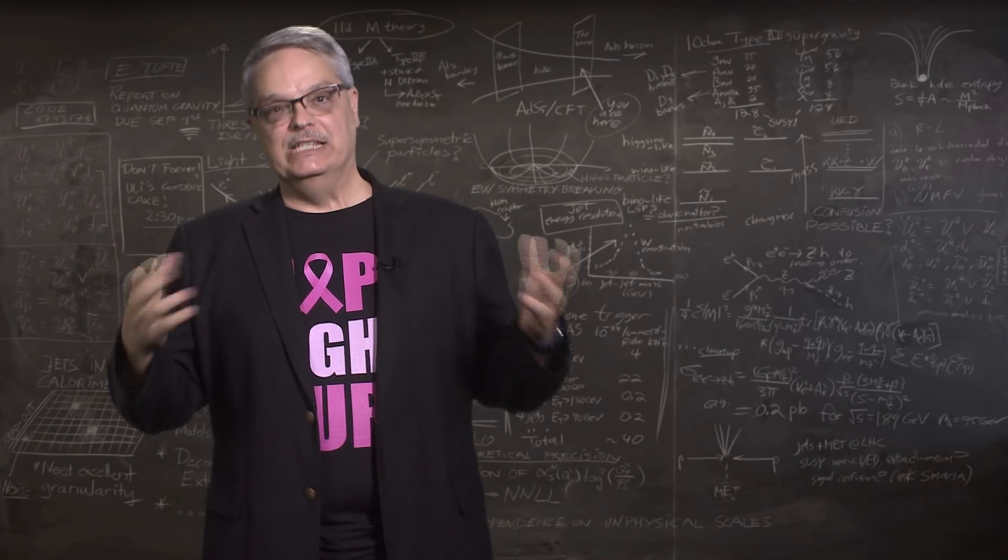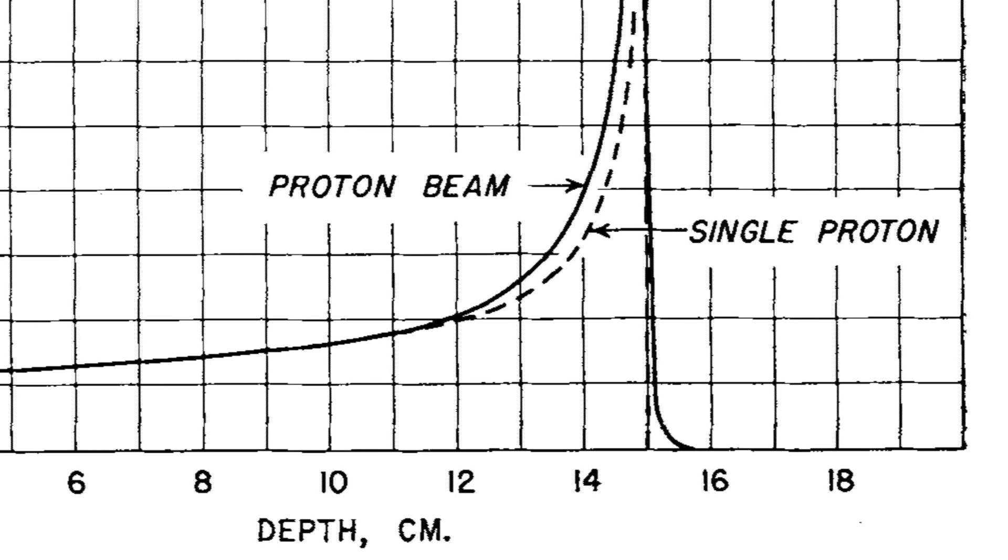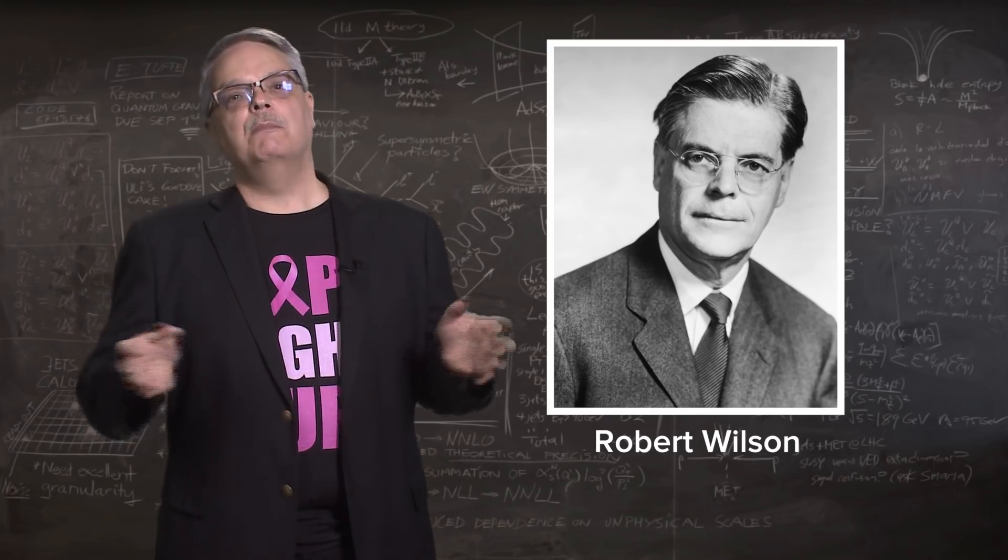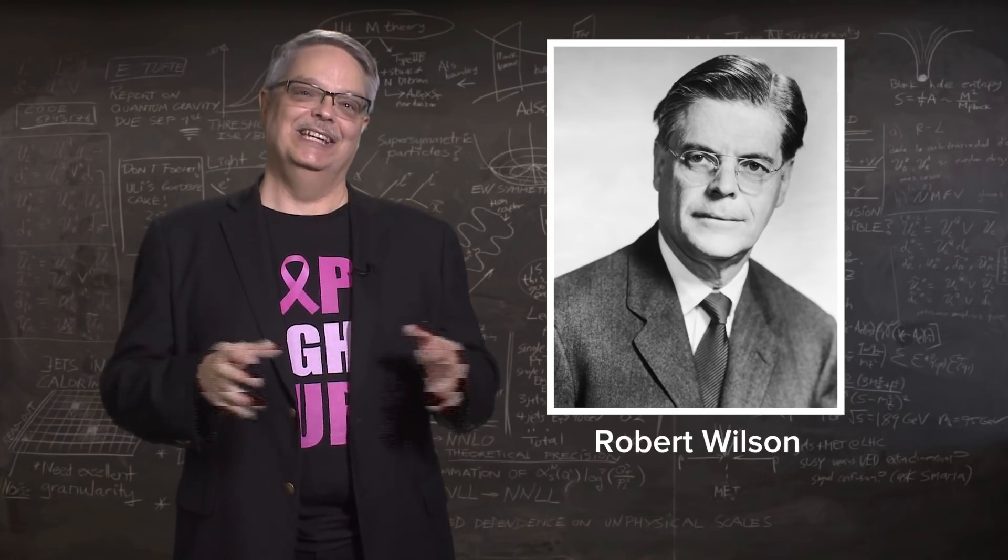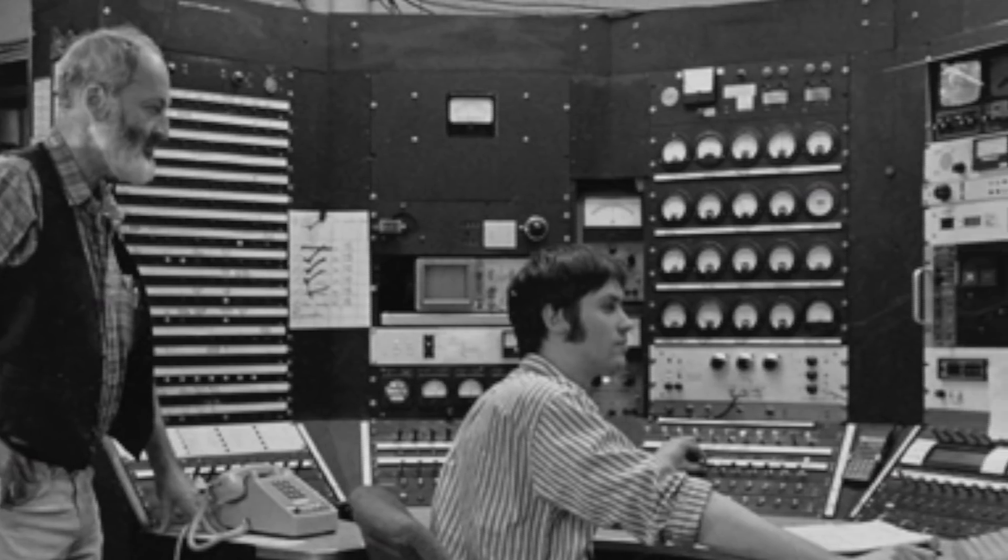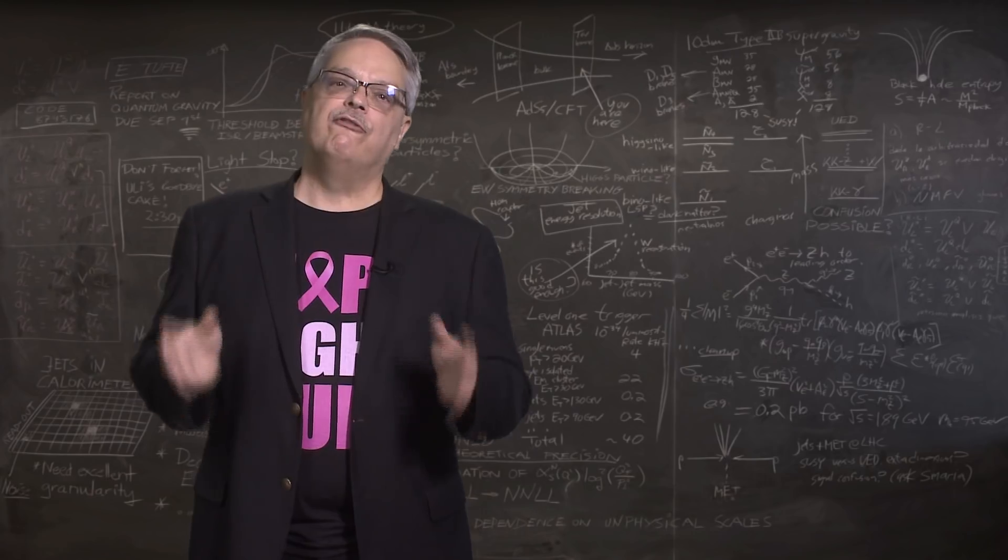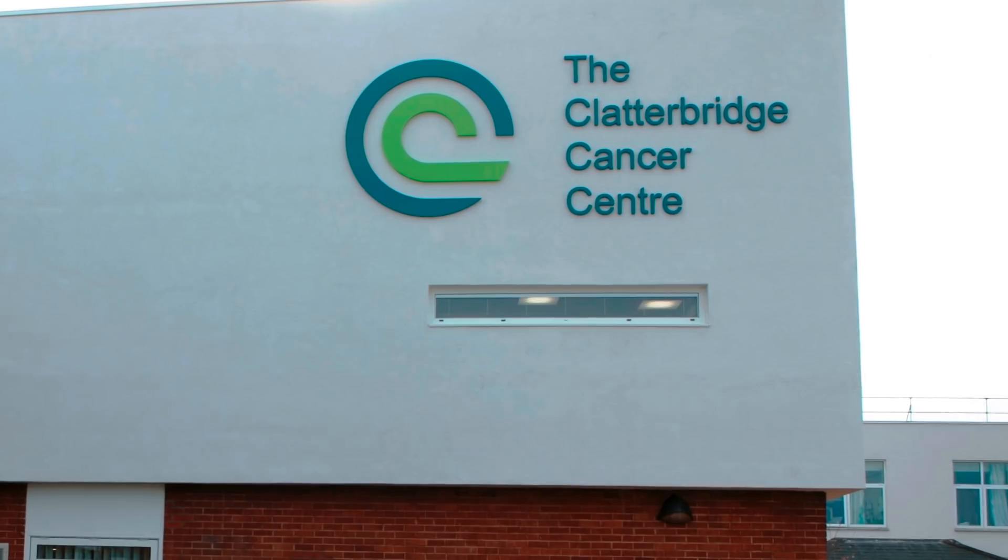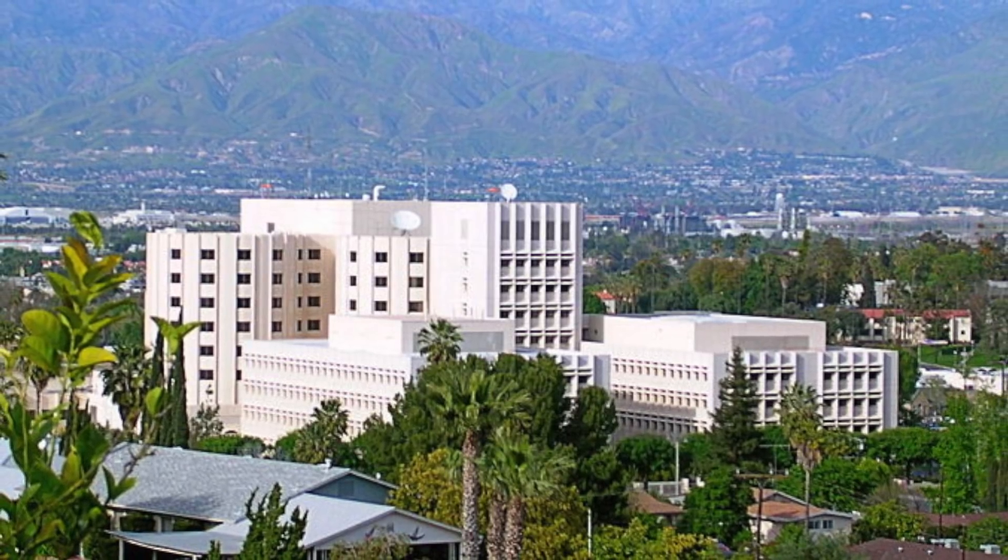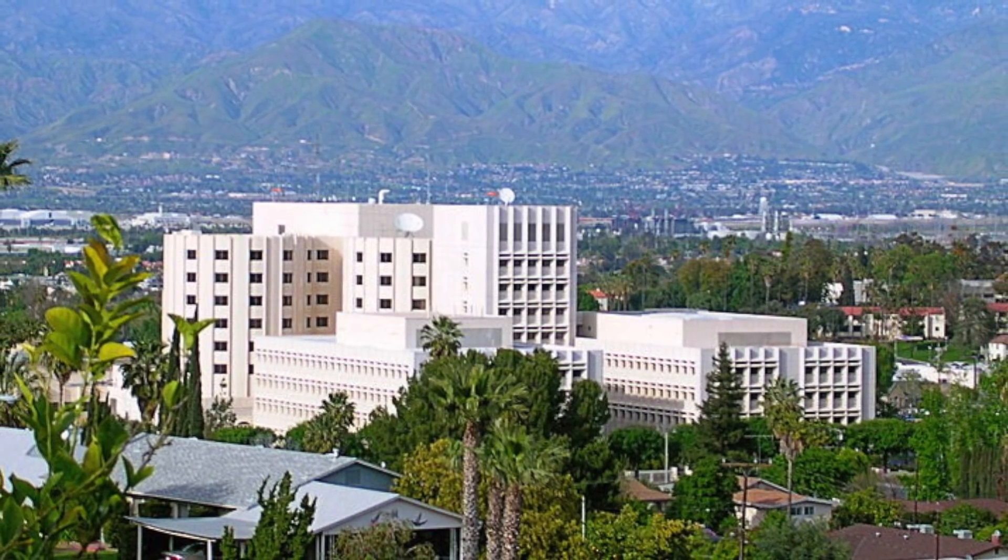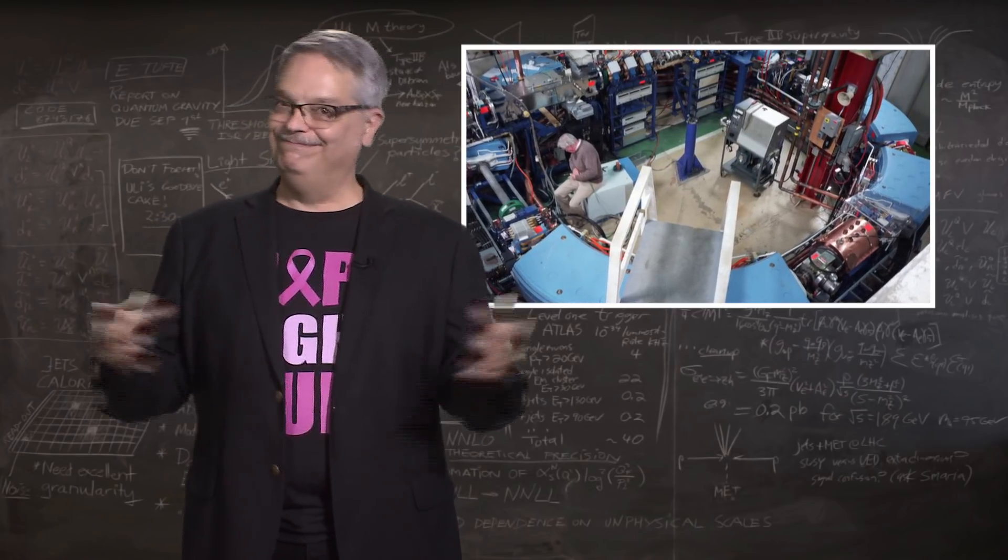Now, proton therapy isn't a new idea. The first paper on the subject was written by Robert Wilson in 1946 when he was developing a cyclotron accelerator at Harvard. Robert Wilson also built Fermilab, the laboratory at which I am a scientist. Wilson was like totally the bomb. The Harvard cyclotron collaborated with Massachusetts General Hospital and developed the technology for over the next 40 years or so. The first commercial and hospital-based facility began in 1989 at the Clatterbridge Center for Oncology in the UK, followed by one at the Loma Linda University Medical Center in 1990. That particular accelerator was built at my own Fermilab and one of my fellow graduate students moved there to operate it. Small world.